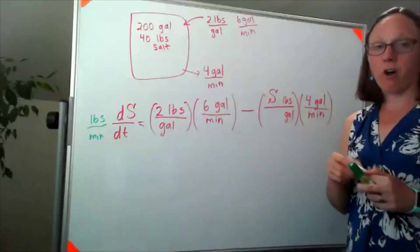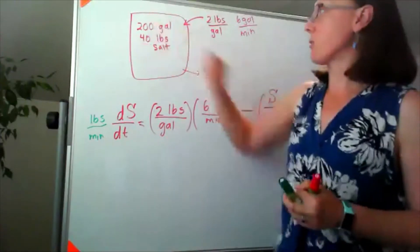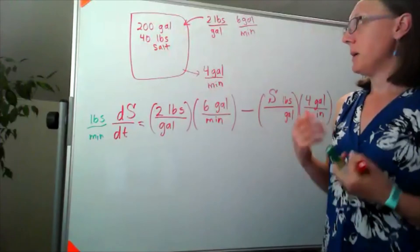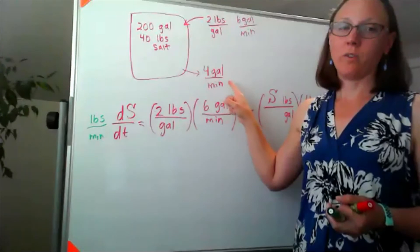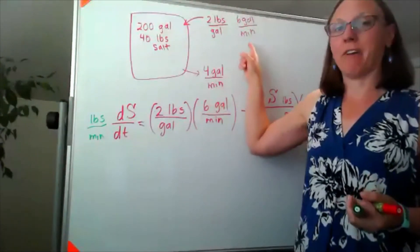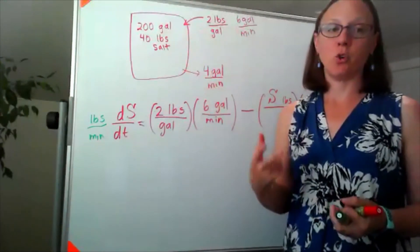In terms of the total volume in the tank, we started with 200 gallons, but each minute six get put in and only four get taken out. That means that each minute I have a build-up of an additional two gallons.